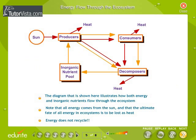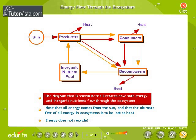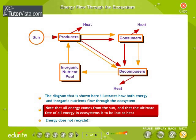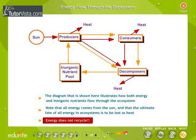Energy flow through the ecosystem. The diagram shown here illustrates how both energy and inorganic nutrients flow through the ecosystem. Note that all energy comes from the sun and that the ultimate fate of all energy in ecosystems is to be lost as heat. Energy does not recycle.